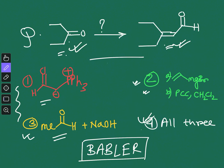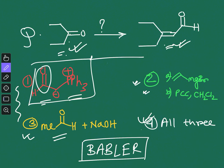In option 1, a Wittig reaction condition is given, but if you look carefully at the Wittig salt, it already contains an aldehyde group — so there is a possibility of self-Wittig, which will lower the yield. Similarly, option 3 is a simple aldol condensation with sodium hydroxide, not a directed aldol reaction. There are possibilities of self-aldol and cross-aldol, giving different byproducts and lowering the yield.